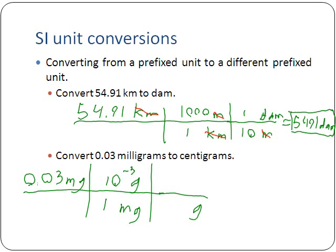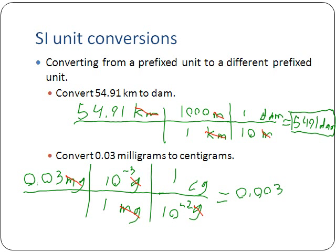Now we want to get rid of grams and go to centigrams. One centigram gets the one because it has the prefix. Centi is 10 to the negative second or one hundredth — the prefix number goes with the base unit. Milligrams cancels, grams cancels, and the only unit left is centigrams, which is what we want. We multiply across the top and divide by the bottom: 0.03 times 10 to the negative third times one, divided by one and then divided by 10 to the negative second. We end up getting 0.003 centigrams.